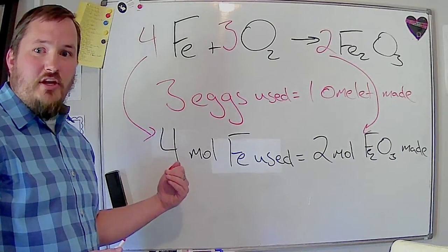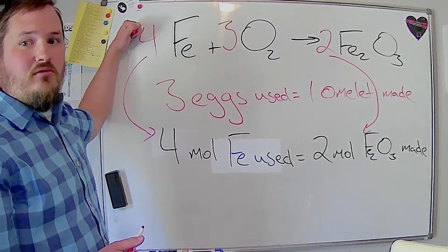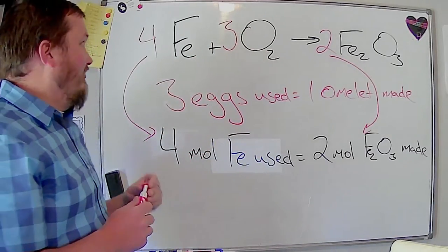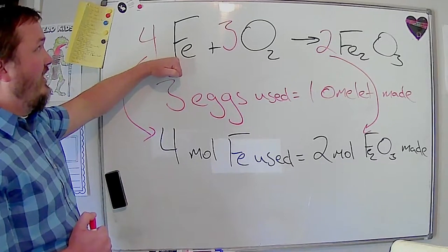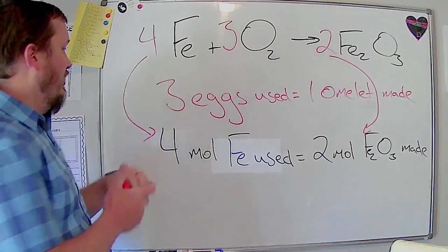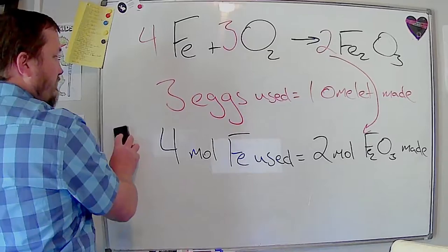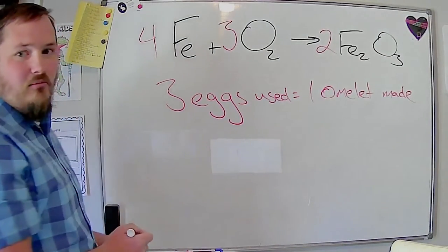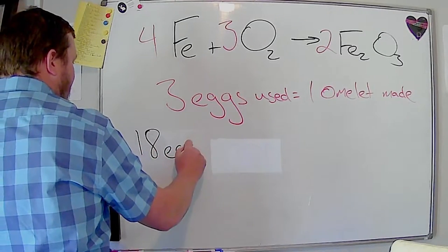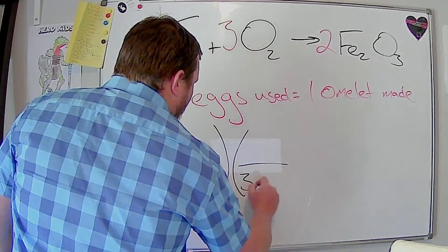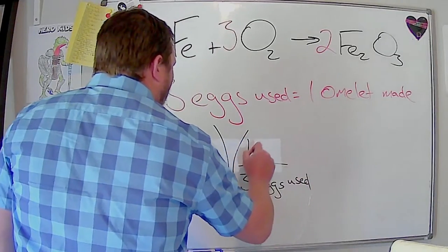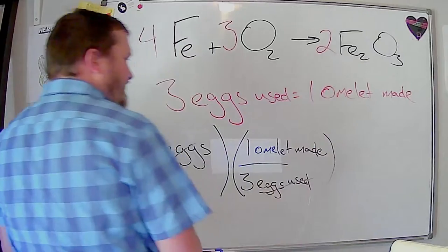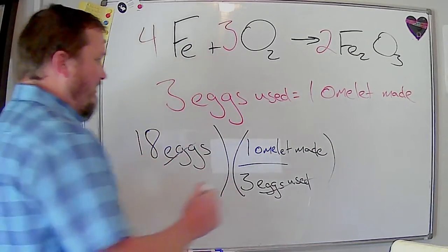And once we have that conversion, it allows us to use a balanced chemical reaction to figure out, to convert from moles of one compound to moles of a different compound. We can combine them in whatever ratios we want, whatever combination we want. We could be comparing how many moles of iron are used for every three moles of oxygen used. And if we wanted to write this out as a conversion, let's do the omelet example first. If I said I had 18 eggs, how many omelets could I make? Well, if I have 18 eggs, and every three eggs used is one omelet made. Eggs cancels eggs, and we're left in just omelets, right? So 18 divided by three would give us a total of six omelets.